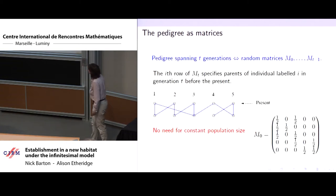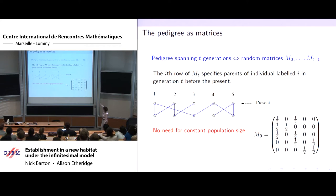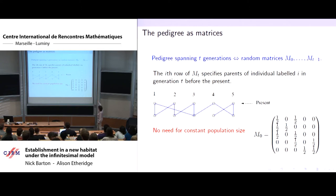One way to represent a pedigree is a matrix. For each individual alive in the present, there's a row specifying who their parents were in the previous generation. Individual 1 had parents labeled 1 and 3 in the previous generation, so I put a half here and a half here — this is just encoding Mendelian inheritance. The population size does not need to be constant, but I happen to have this picture drawn for constant population size.